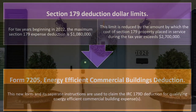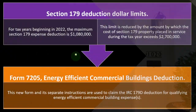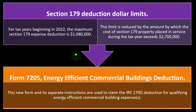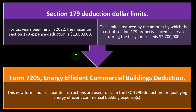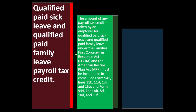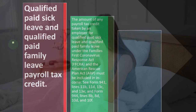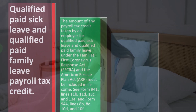We may dive into special depreciation and Section 179 more in future presentations. Form 7205, Energy Efficient Commercial Building Deduction — this new form and its separate instructions are used to claim the IRC Section 179D deduction for qualifying energy-efficient commercial building expenses. There is also the qualified paid sick leave and qualified paid family leave payroll tax credit.